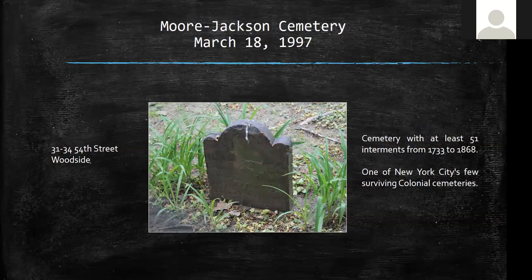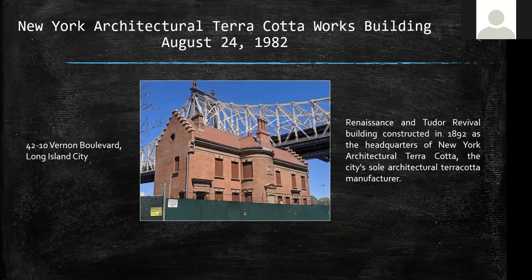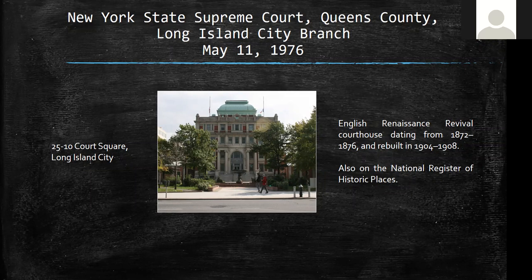The Moore-Jackson Cemetery dates from 1733 — another colonial cemetery on the border with Woodside. The architectural terracotta building: terracotta was the largest building material for facades in the closing years of the 19th century. There was a huge factory around it; all that remains is this building, which is a New York City landmark. People have been waiting decades to figure out what to do with it. The Courthouse is a fabulous building, rebuilt in 1904 and also on the National Register of Historic Places. A number of famous trials were held there — it had a jail behind it, which was later torn down.